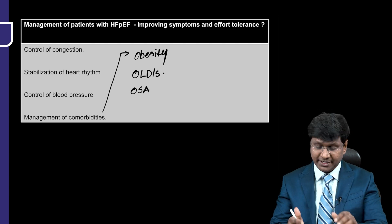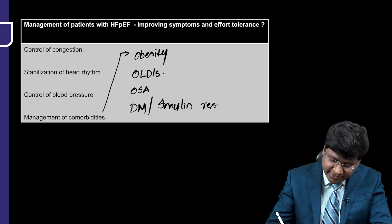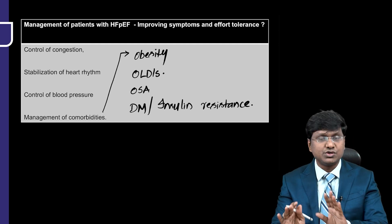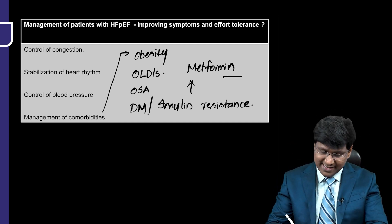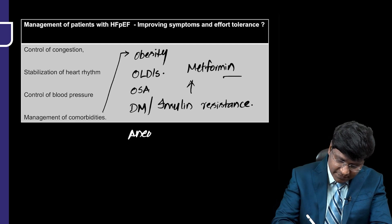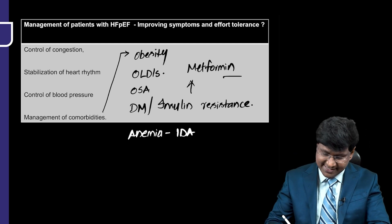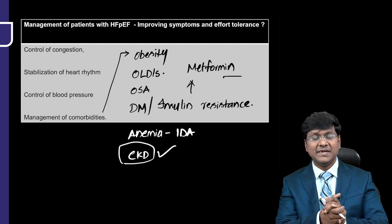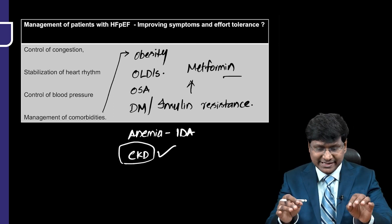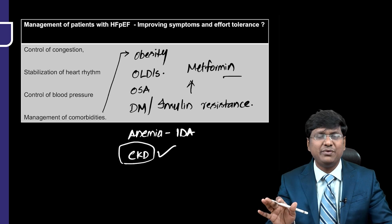You also need to treat diabetes mellitus or associated insulin resistance due to obesity. The drug of choice for insulin resistance is metformin. You also need to treat any underlying anemia — specifically iron deficiency anemia. Finally, treat any CKD, because CKD causes fluid overload, which will precipitate the underlying heart failure. Management of comorbidities in HFpEF is a very important part of treatment.